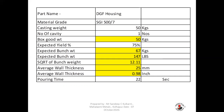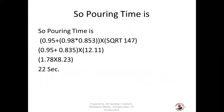In this example, the wall thickness is 25 mm, which converts to 0.98 inches. Applying the formula: (0.95 + 0.98) × 0.853 × √147, where 147 LBS is the bunch weight. The calculation gives approximately 22 seconds. So the pouring time for a 50 kg casting with a 25 mm wall thickness is 22 seconds.